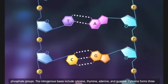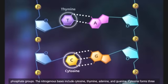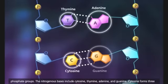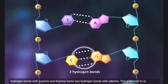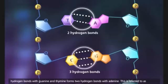The nitrogenous bases include cytosine, thymine, adenine, and guanine. Cytosine forms three hydrogen bonds with guanine, and thymine forms two hydrogen bonds with adenine. This is referred to as complementary base pairing.